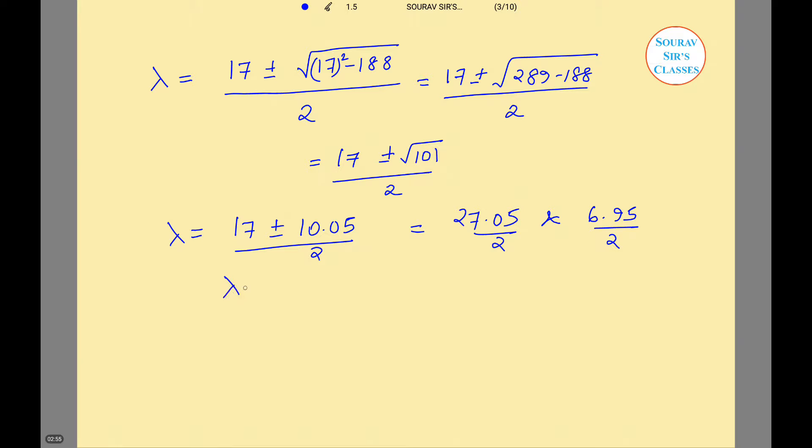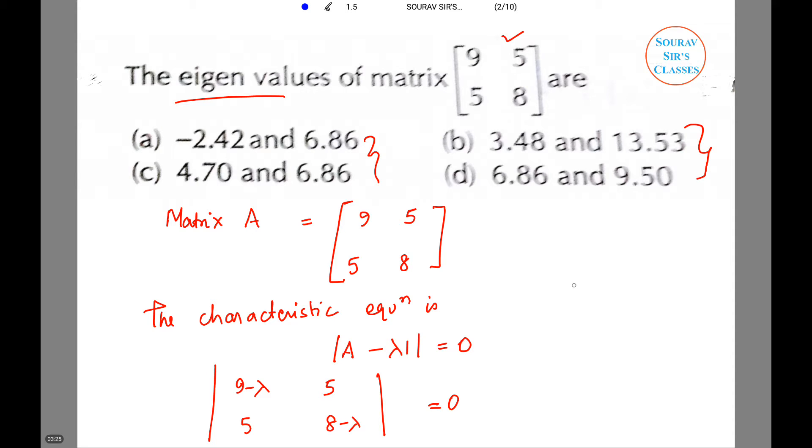So λ finally equals 13.525 and 3.475. Therefore the eigenvalues are 13.53 and, rounding this up, it will become 3.48. So we have got two values which were 3.48 and 13.53.